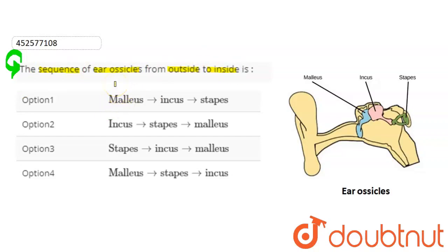In this question, we are asked about the sequence of ear ossicles which are in our middle ear. Okay, we will start here.